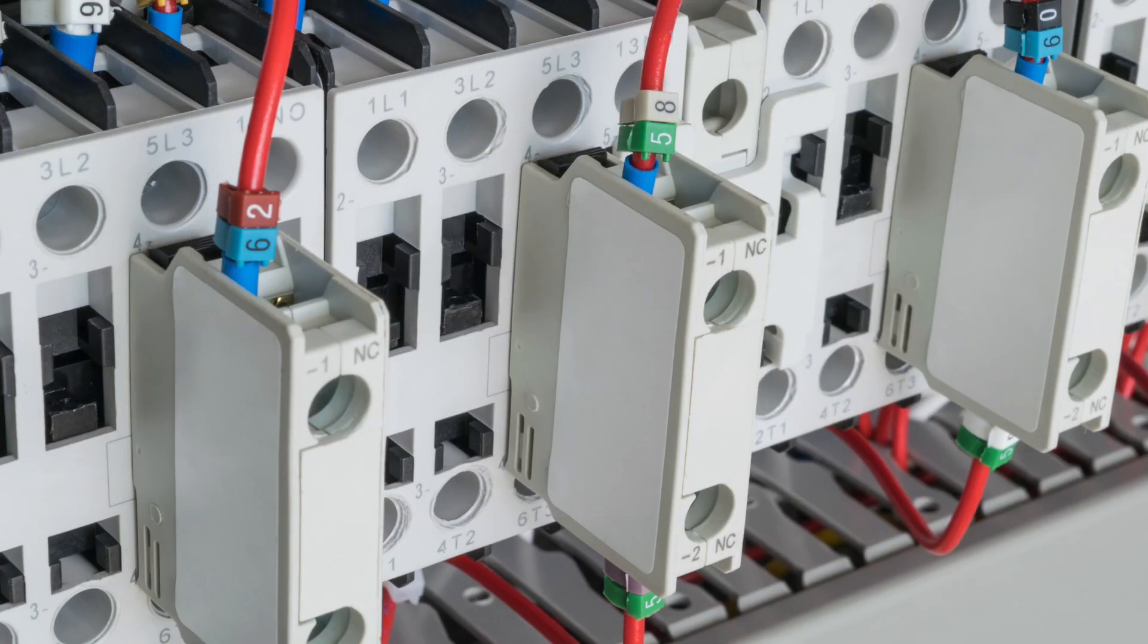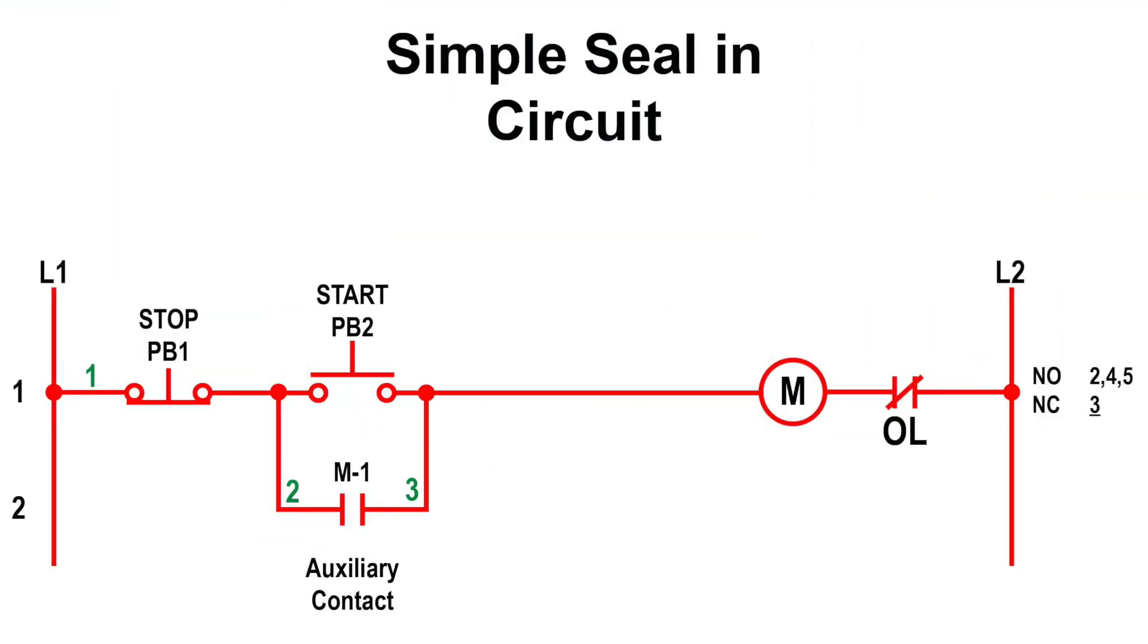Auxiliary contacts of a contactor have a much lower current rating than the main contacts and are used in control circuits for interlocking, holding, and status indication. The example provided shows auxiliary contacts being used to seal in or hold the motor, to keep it running after the start button has been depressed.